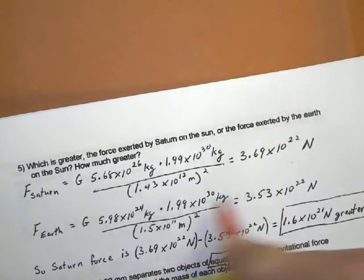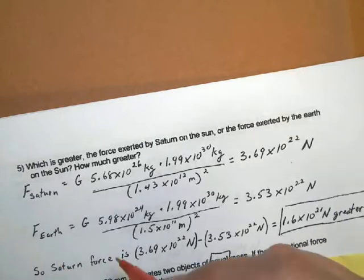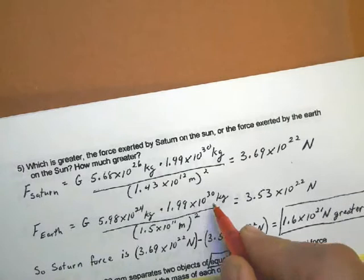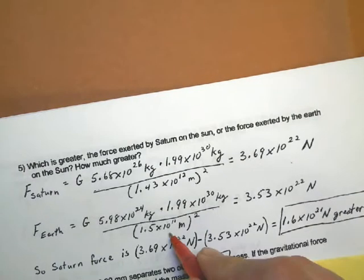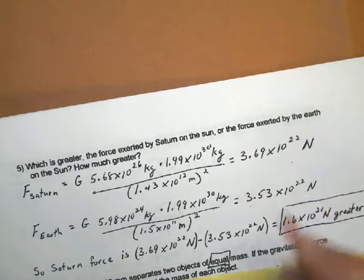So to compare them, you just take the force exerted by Saturn on the Sun and subtract the force exerted by the Earth on the Sun. And you'll find that the Saturn force is this many newtons greater than the force between the Earth. Alright, I'm going to stop recording here, before I make another one for number 9.